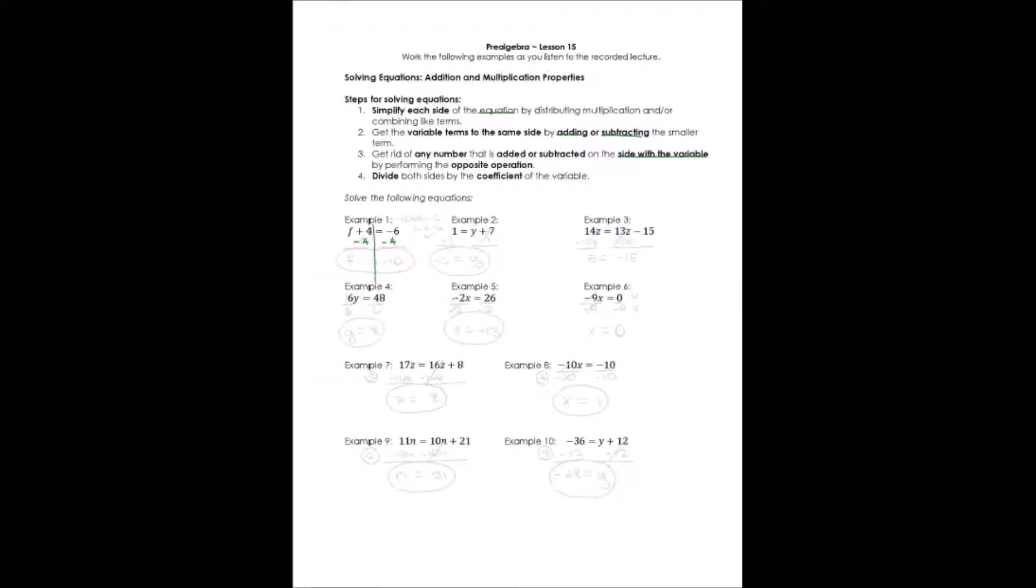I have to do the same thing to both sides of an equation, so I'm going to subtract four from the other side also. When I do that, f is all that's left on the left. What happens to the four minus four? Well, it turns into zero, which I don't have to write. But I will put my equal sign down, and I'm going to say f equals, and the right side is negative six minus four, which is a negative ten.